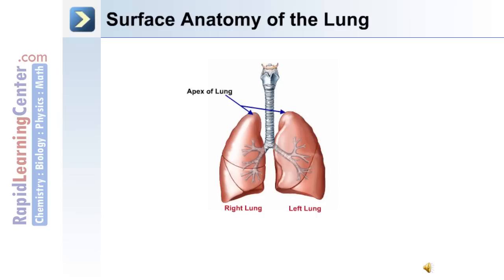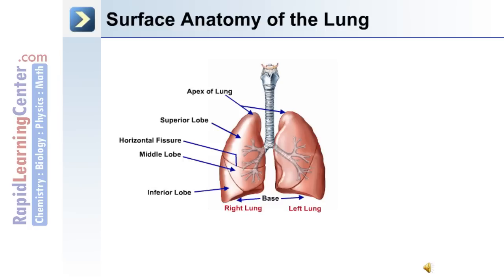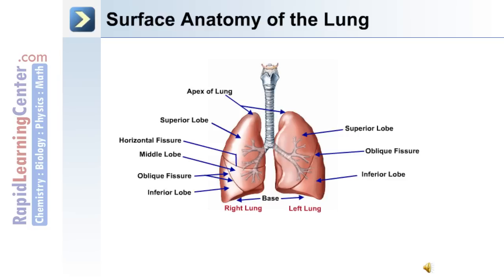The most superior portion of the lungs is known as the apex, and the inferior is the base. The right lung contains a superior lobe separated from the middle lobe by the horizontal fissure, and an inferior lobe separated by the oblique fissure. The left lung contains a superior lobe and an inferior lobe separated by an oblique fissure.